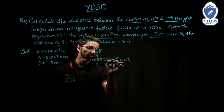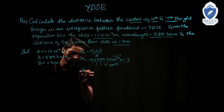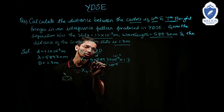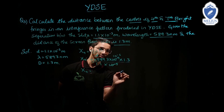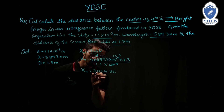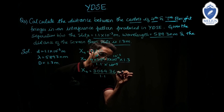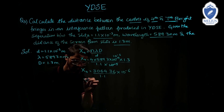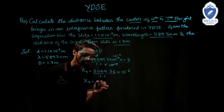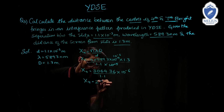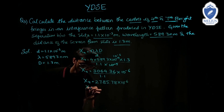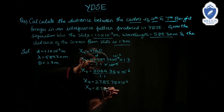X4 equals 4 into 589.3 into 10⁻⁹ into 1.3 divided by 1.1 into 10⁻³. Cancelling 10⁻⁹ and 10⁻³ gives 10⁻⁶. Calculating: 4 into 589.3 into 1.3 equals 3064.36, divided by 1.1 gives 2785.78 into 10⁻⁶ meter. Therefore X4 equals 2.785 millimeter.